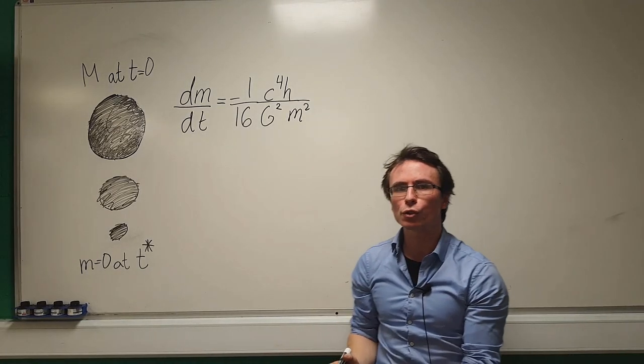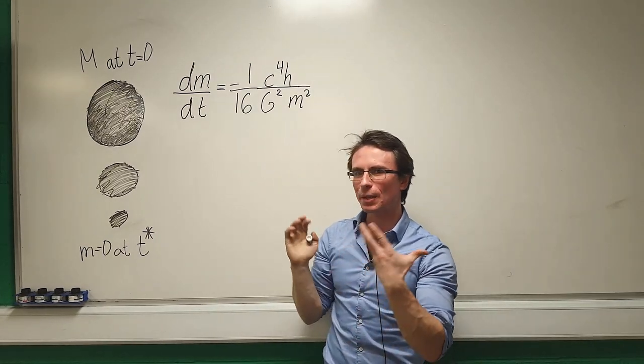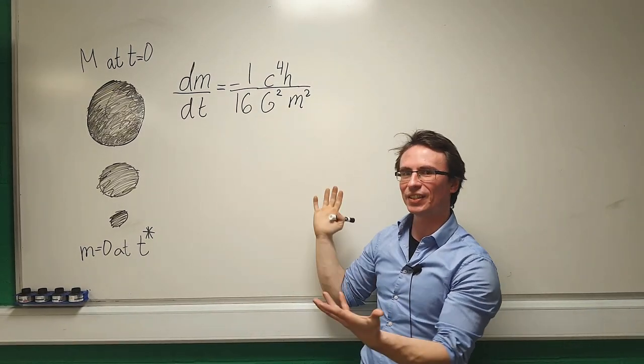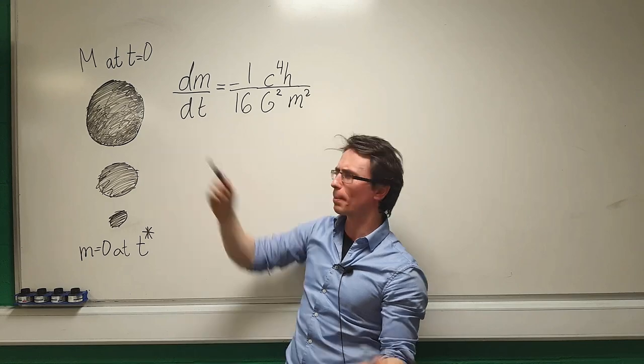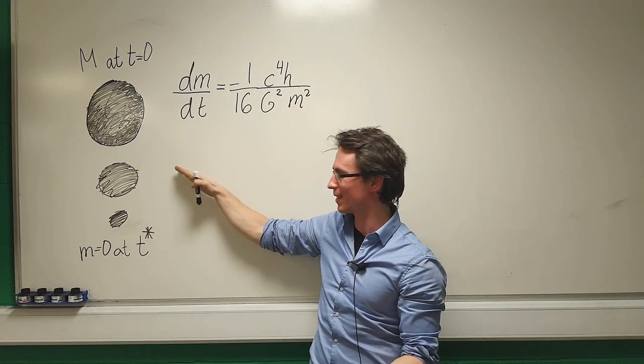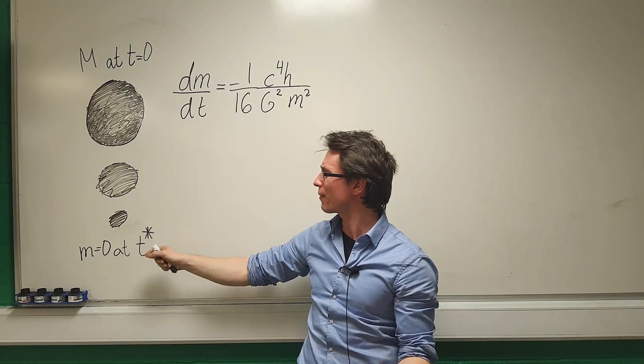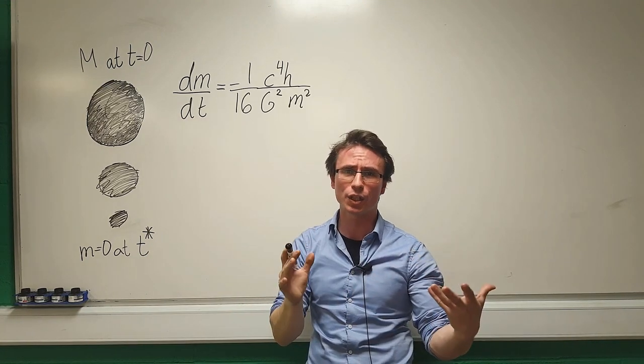Let's have a look at solving this equation. It is showing us that the mass of a black hole is decreasing. Imagine that we're starting with a black hole of mass m. Its mass is steadily decreasing until it is finally evaporated at time t star.